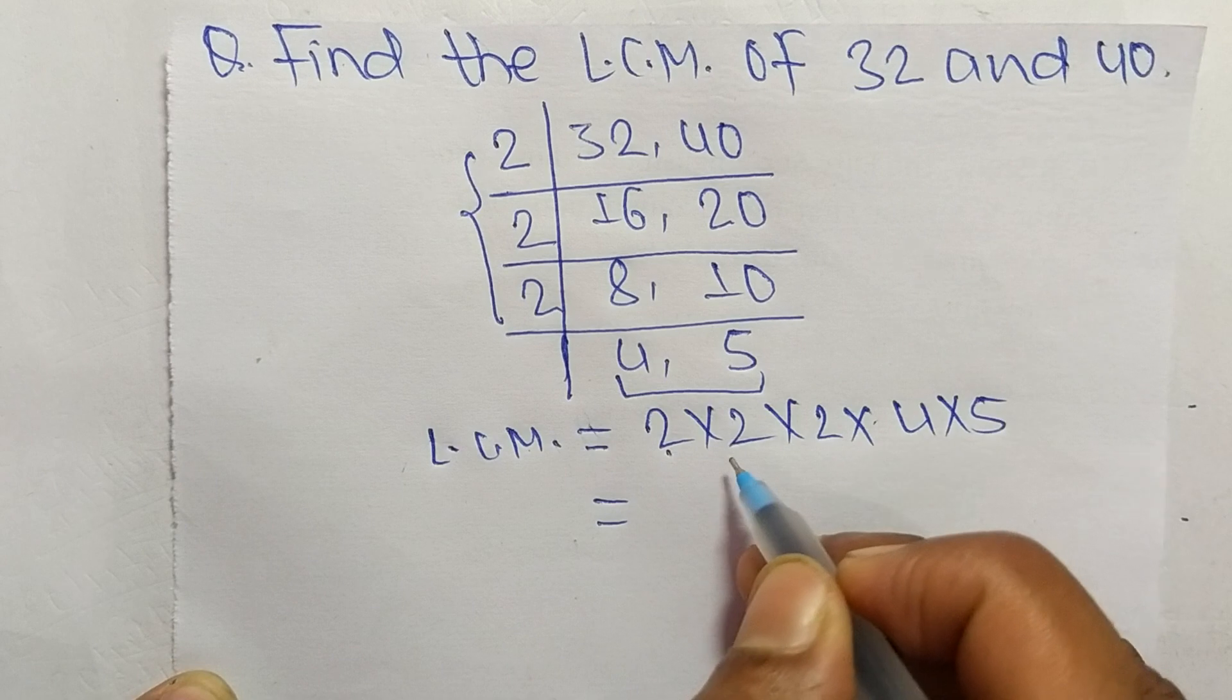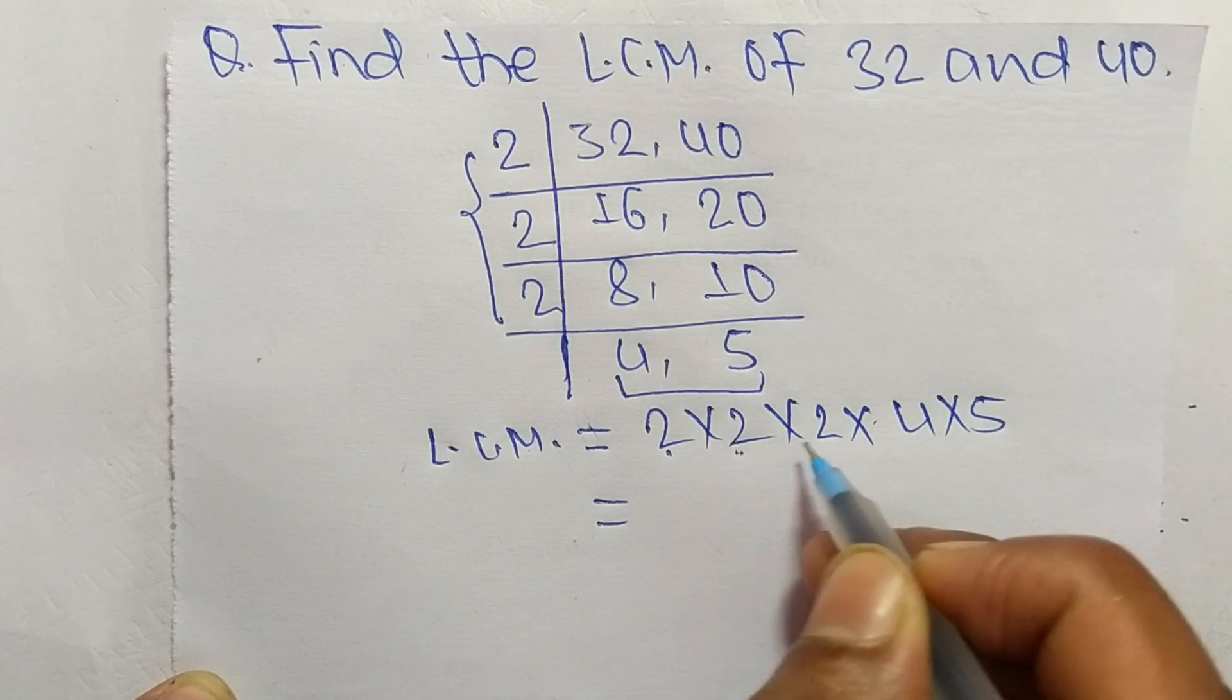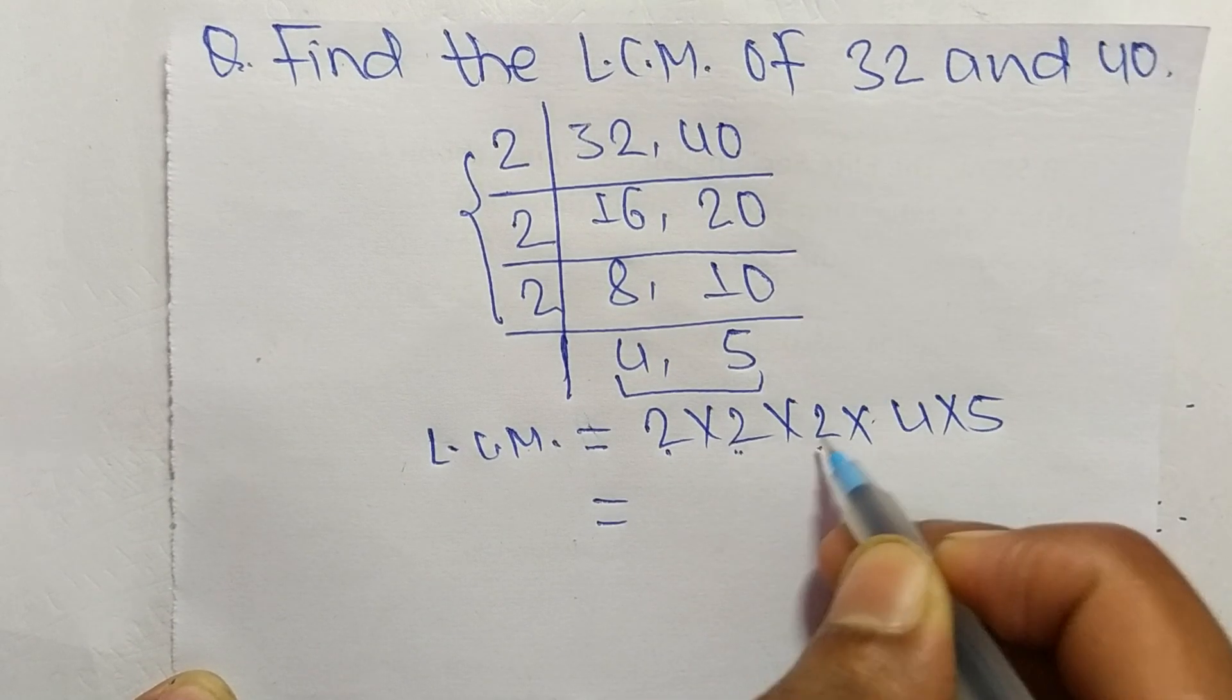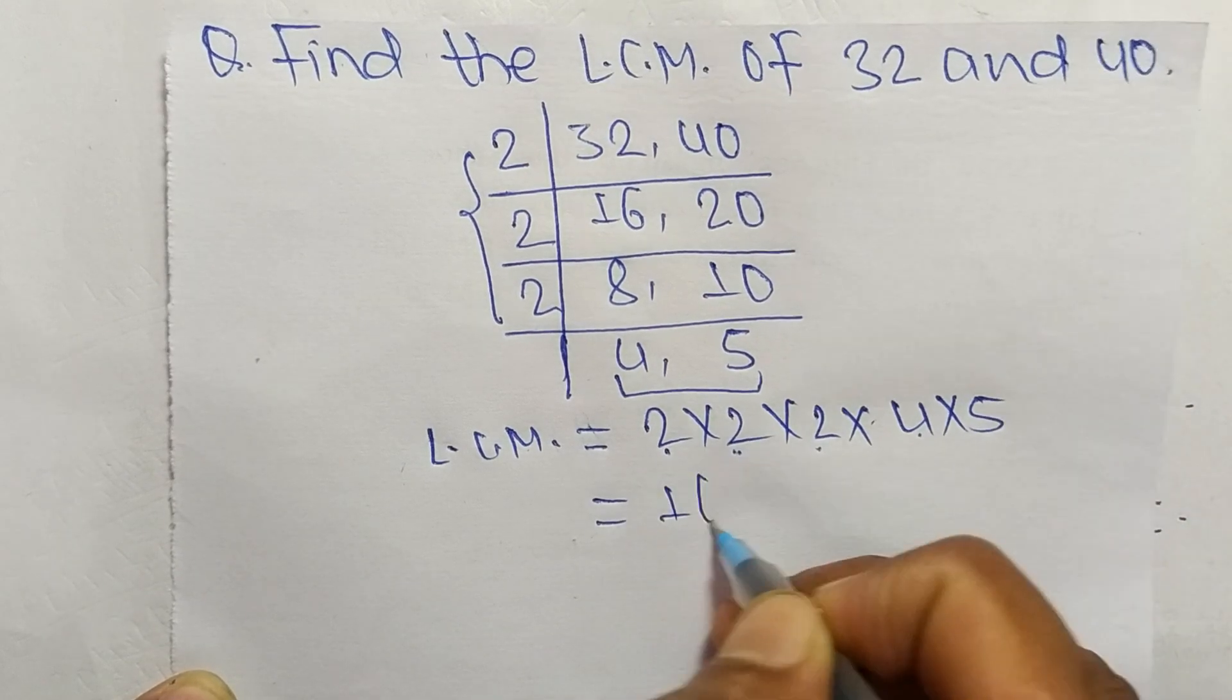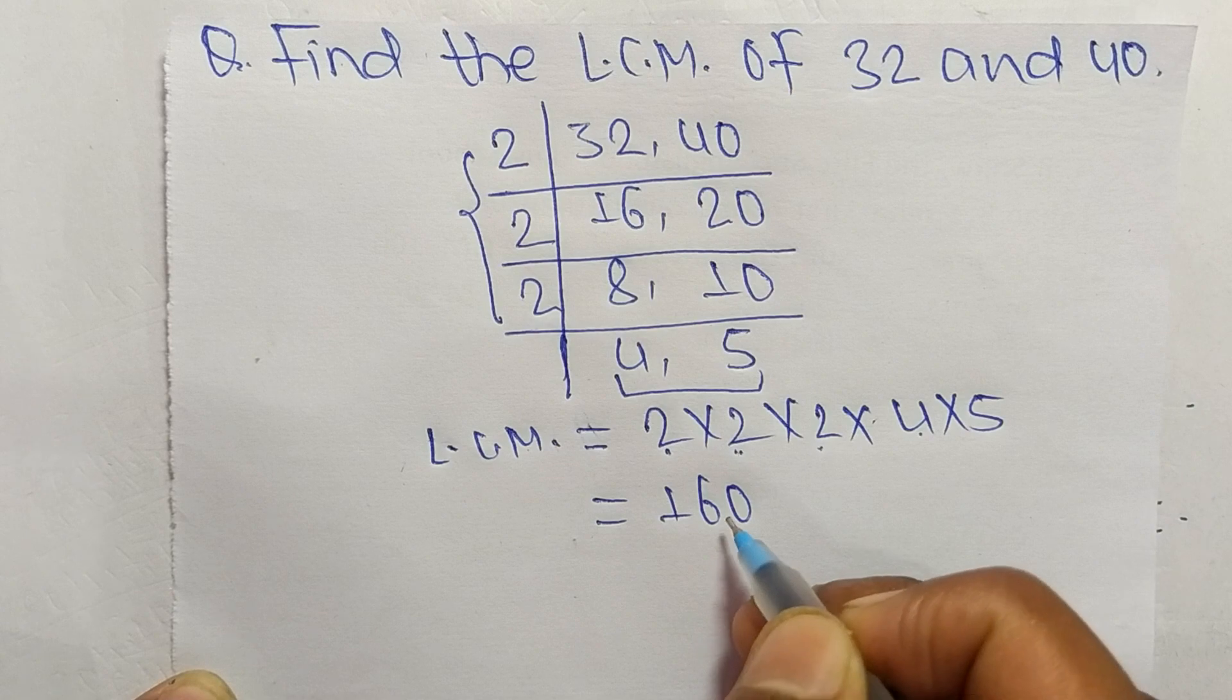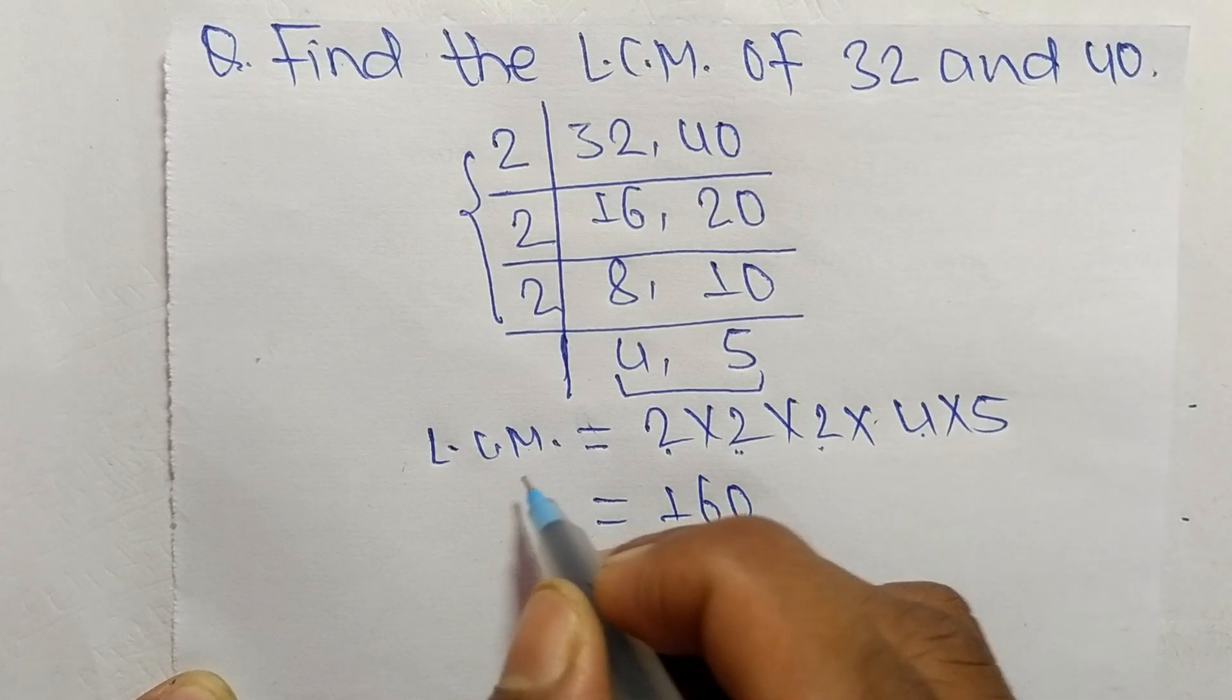And 8 times 4 equals 32, 32 times 5 equals 160. So 160 is the LCM of 32 and 40.